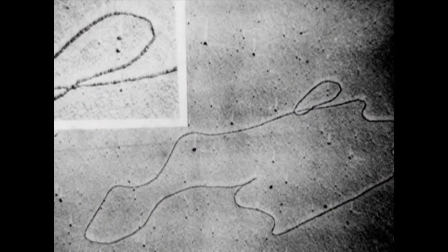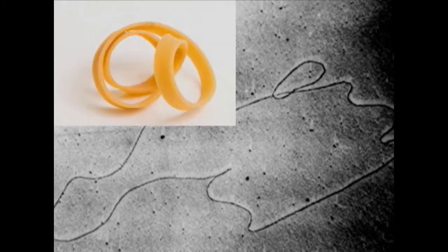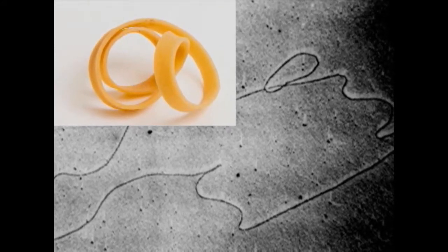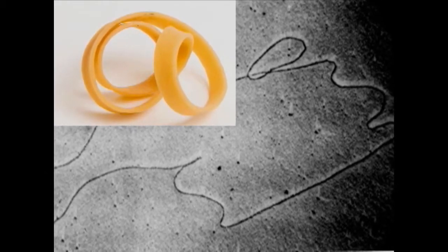Plasmids are circular chains, but are normally found in a supercoiled state, like a rubber band that's been twisted until it coils itself into a little ball. Because supercoiled DNA is so tightly twisted, the alkaline solution won't break it down.